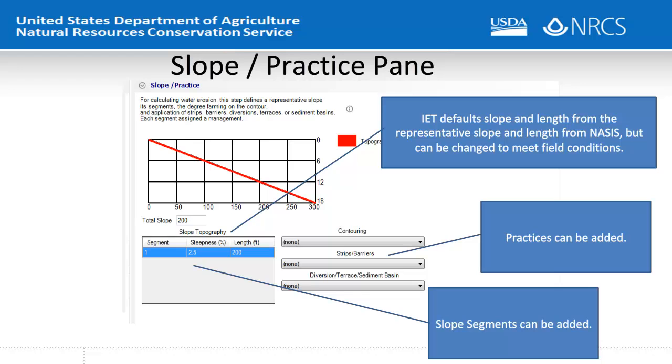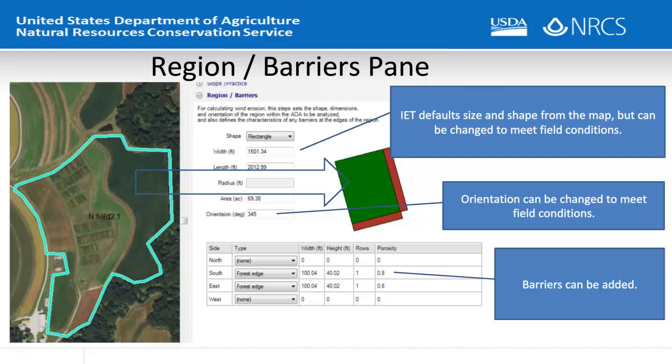In WEPs, the planner must manually enter the shape and size of the field. In IET, the shape and size of the field will be automatically calculated from the spatial shape of the selected field. The planner can change the information as needed. For the best estimate of wind erosion, the planner should adjust the orientation of the field to meet actual field conditions and add any barriers to wind erosion on the sides of the field. Being able to visually see the size, shape, orientation, and barriers of the field on the map can aid the planner in entering accurate information.